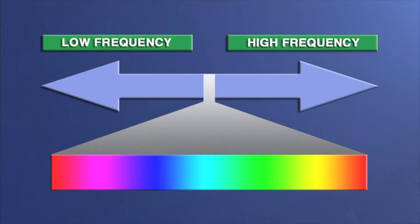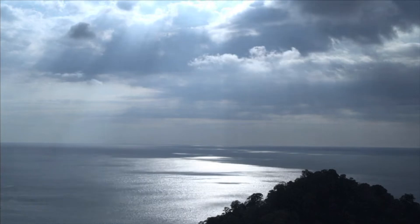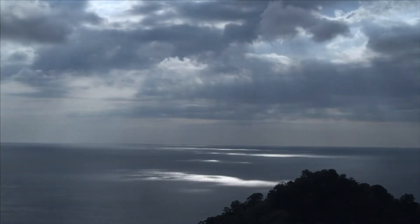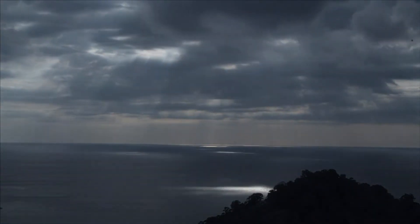All electromagnetic waves travel at the same speed but have different wavelengths and frequencies. The electromagnetic spectrum is made up of radio waves, infrared rays, visible light, ultraviolet rays, x-rays, and gamma rays. As you can see, light waves fall somewhere in the middle of the spectrum. The fact that you can see light waves is very important — that's one way they are different from all the other electromagnetic waves: they are visible.